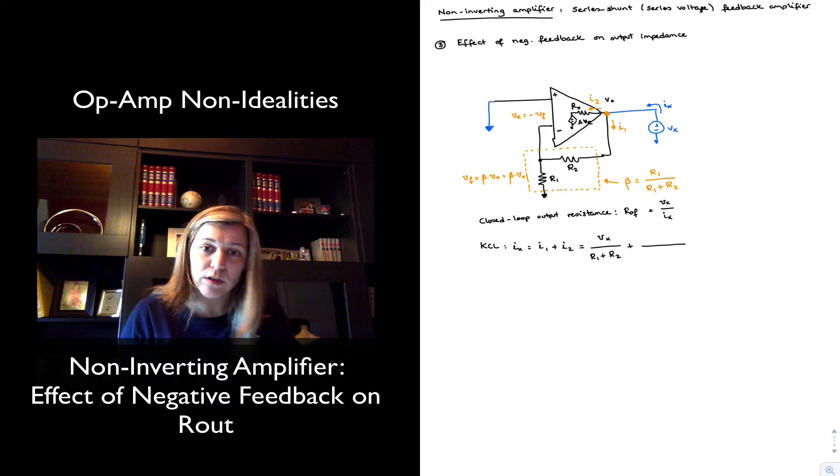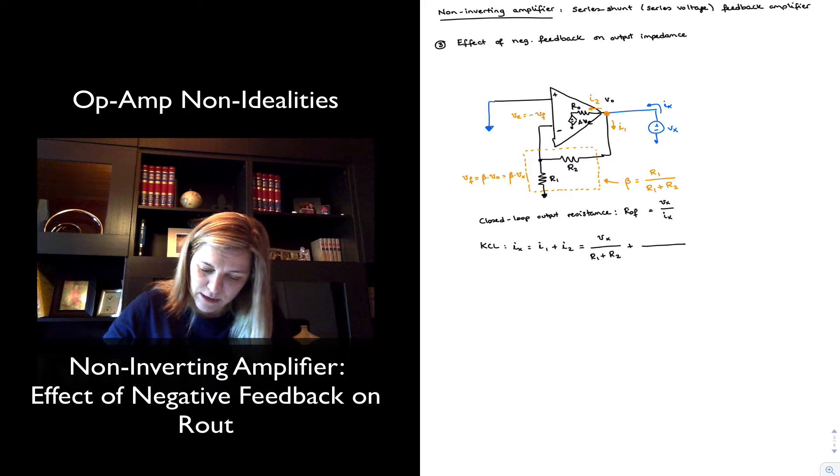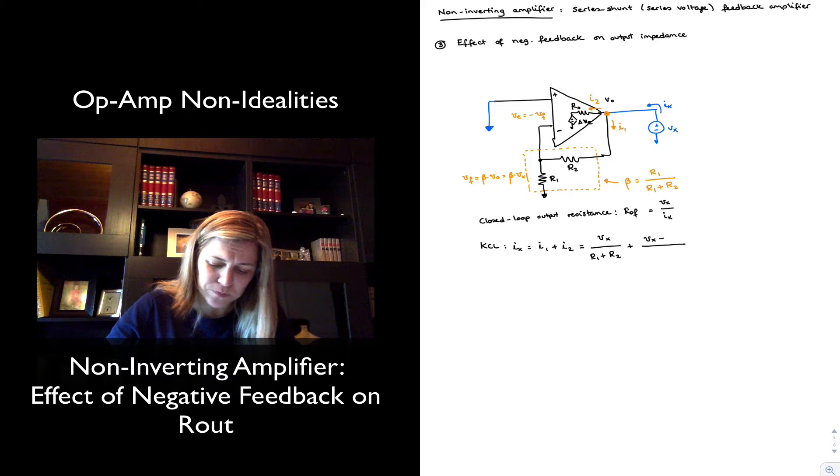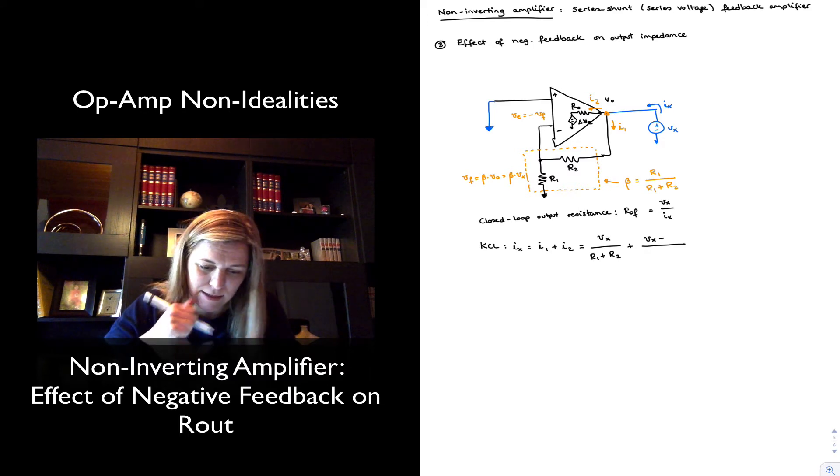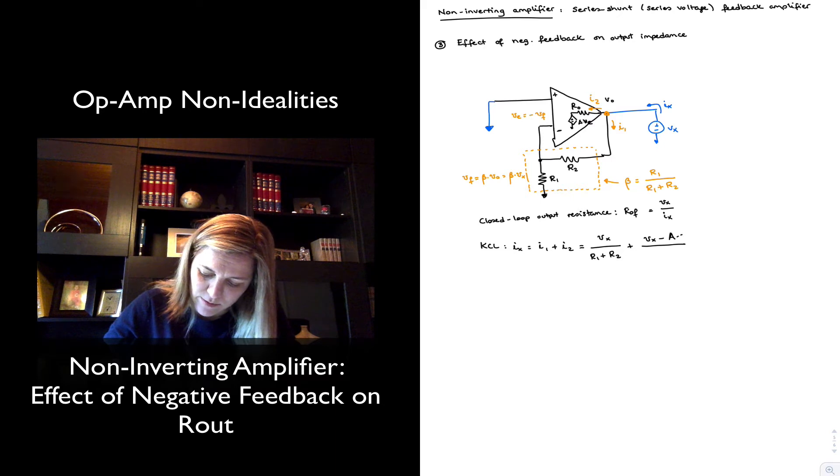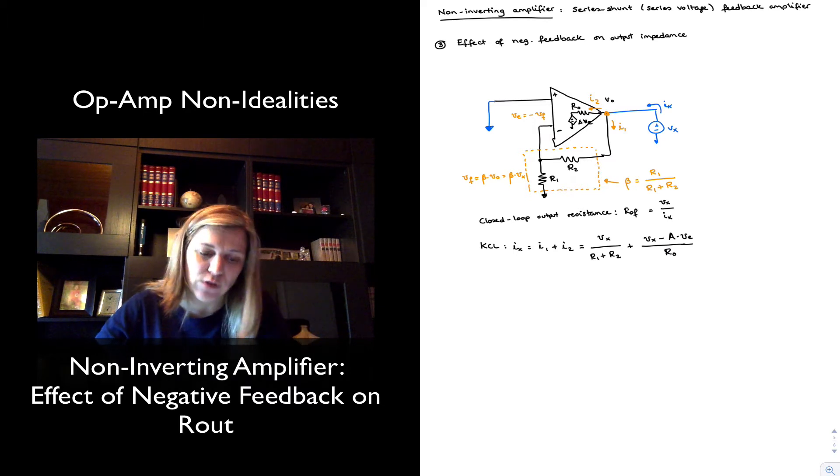And I2, the current going into the output resistance of the op-amp, is Vx minus the voltage from the dependent voltage source, which is A times VE, A times whatever input signal you apply at the circuit. So minus A times VE divided by the resistance, which is R out, the output resistance of the op-amp.